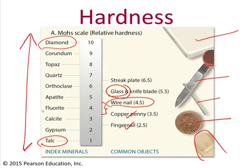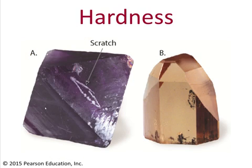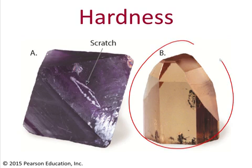One example mineral that falls into that range is the mineral fluorite. Here's an example where we've got two minerals and we've tried to figure out which one is harder. Basically all you have to do is grind them against one another, and whichever one succeeds in scratching its neighbor is the harder of the two. So in this case, sample B would be harder because it scratched sample A.